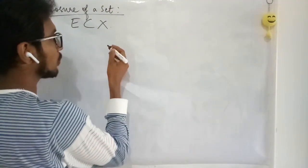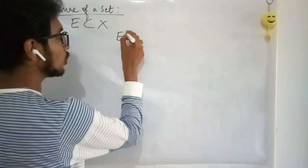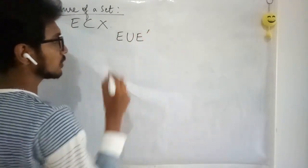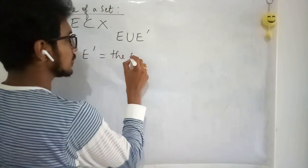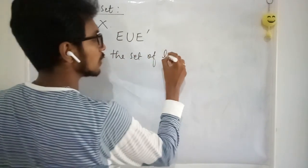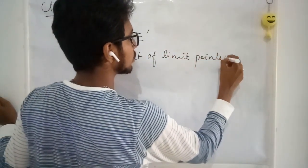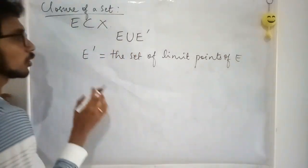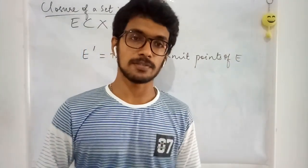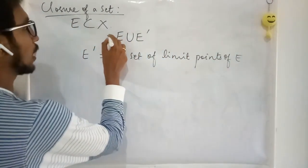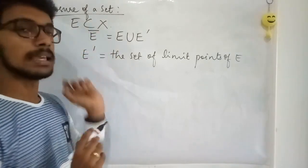By closure, what we are trying to say is that it is going to be the union of two things: the set E and the set of limit points of E, denoted E prime. So you are making a union of the set with the limit points of that set, and you are going to call that the closure of the set, denoted as E-bar.